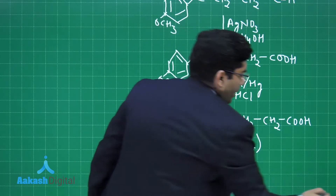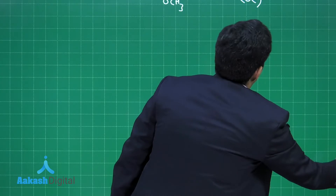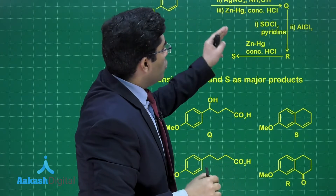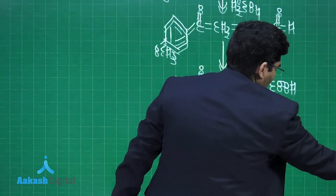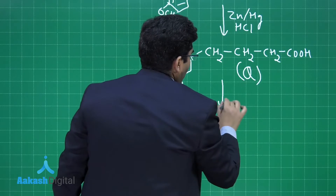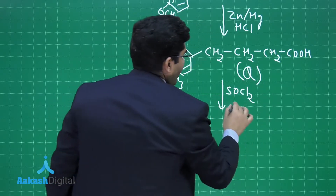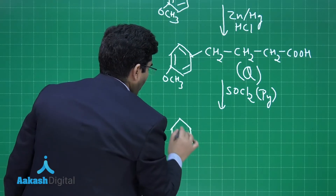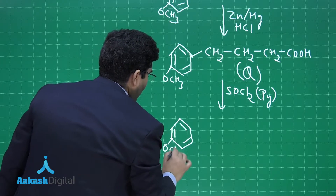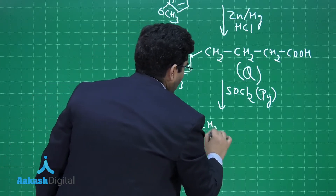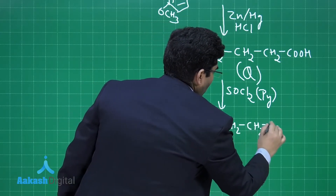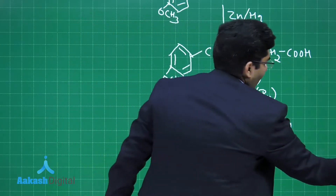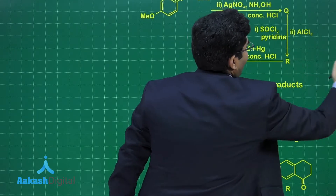Now we react product Q with SOCl2 in the presence of pyridine. When a carboxylic acid reacts with SOCl2 and pyridine, we get an acyl halide. The product is: benzene ring—OCH3—CH2—CH2—CH2—COCl. The COOH group converts into an acyl chloride (COCl).